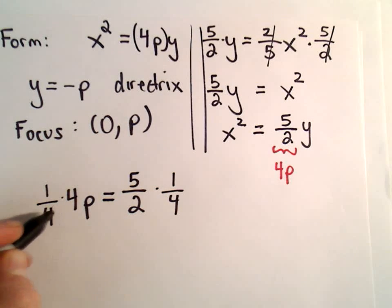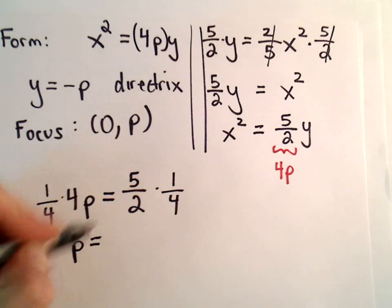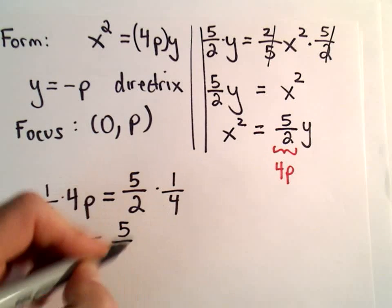Okay, so on the left side, a fourth times 4, we'll just leave this with p. 5 times 1 is 5, 2 times 4 is 8.